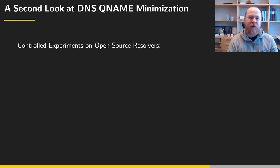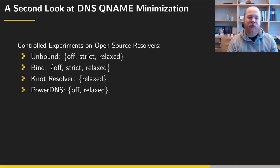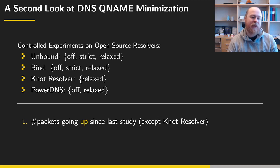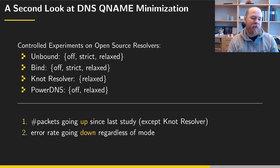We performed controlled experiments measuring performance and response quality on four open source resolvers: Unbound, BIND, Knot Resolver, and PowerDNS. These support different modes: "off" (no minimization), "strict" (minimization only), and "relaxed" (minimization with fallback to normal on error). Unbound and BIND support all three modes; Knot Resolver runs only in relaxed mode; PowerDNS can be turned off or run in relaxed mode. We observe a trend where the number of packets is increasing since the previous study — except for Knot Resolver — and error rates are going down regardless of mode, suggesting some broader change in the DNS ecosystem.